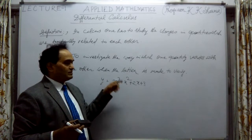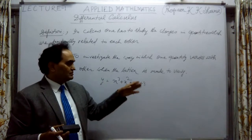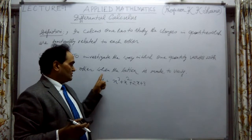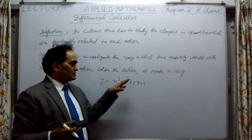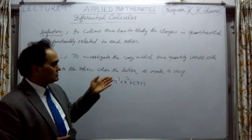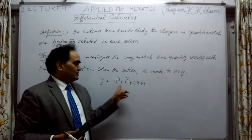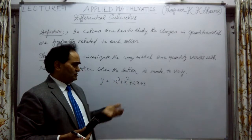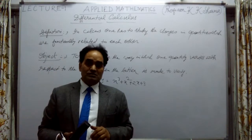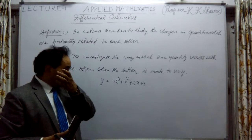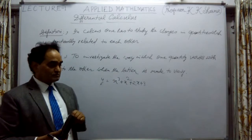Here y is the dependent variable. So y = x³ + x² + 2x + 3. If I change x, we have to find out how y changes when x is being changed — that is the basic object of differential calculus. For different values of x, y will also change. In differential calculus, we study how quantities or functions are related to each other.